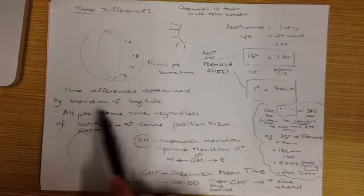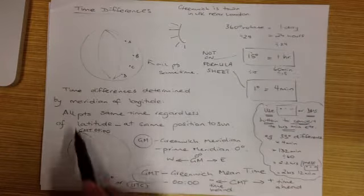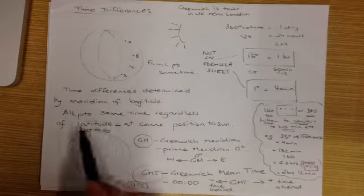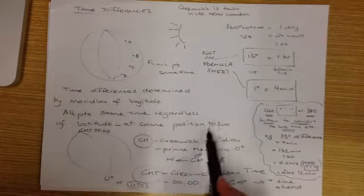The fact that they're on that same longitude means that they have the same time. So time differences are determined by the meridian of longitude. All points have the same time regardless of latitude at the same position to the Sun.